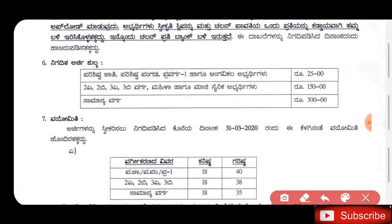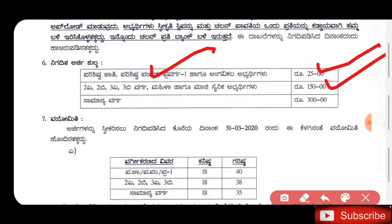The fee is ₹75 for both 2A and 2B. Categories 3A, 3B, and 5 are at ₹150. It is ₹300 for the general application. However, if the same category applies, the fee is ₹75 for both.